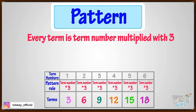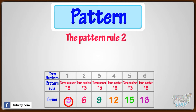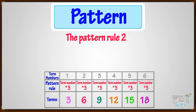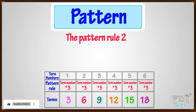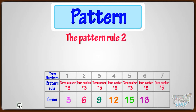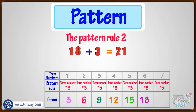Term number one is three, which is three multiplied by one. Term number two is three multiplied by two. If we have the pattern rule, we can find the next terms easily. Like here, the next term would be 18 plus 3 equals 21. Also, the next term would be 7 multiplied by 3 equals 21.